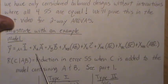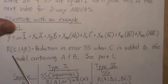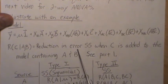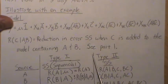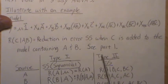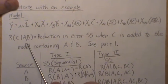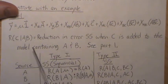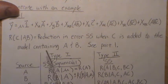The order in which we put these terms in the model is important — it's important for type 1 sums of squares, which we'll illustrate. Remember that R(C | A, B) is the reduction in the error sum of squares when C is added to the model containing A and B. See part 1 for more details. This reduction plays a part in the type 1 through type 4 sums of squares.